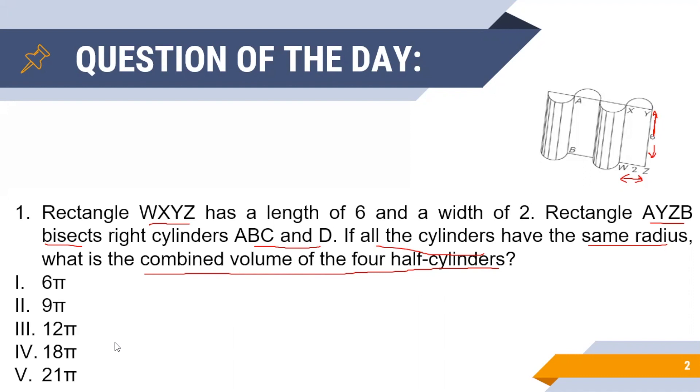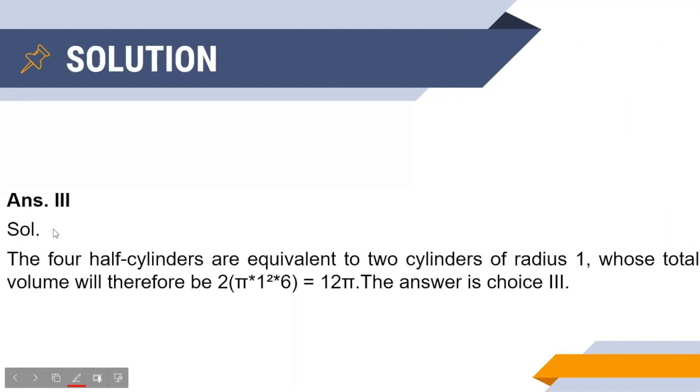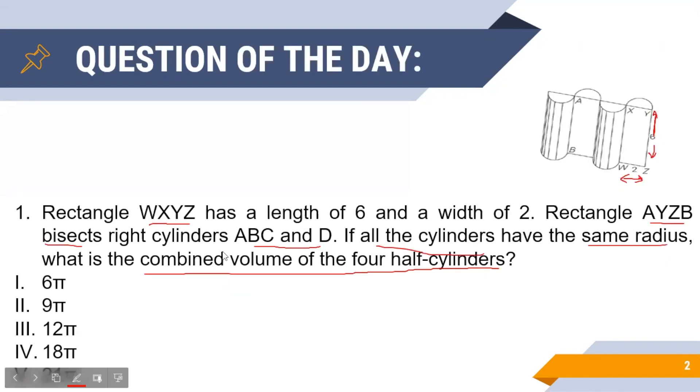Before we move on to the detailed solution, let us take a quick glance at the correct answer. As you can see, the correct answer is option 3. That is, the combined volume of the four half cylinders is 12π.